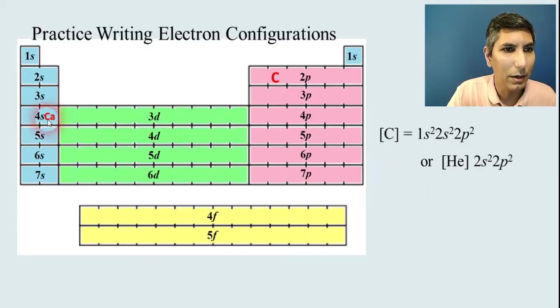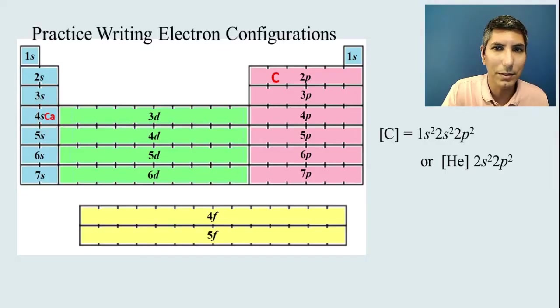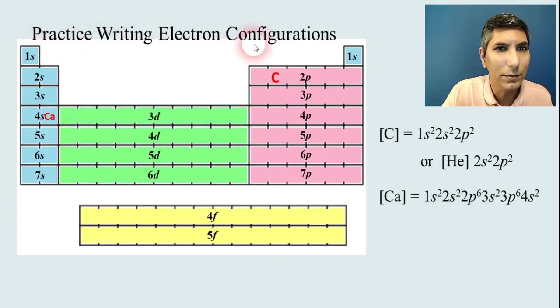If you want to try, let's say calcium, which is right here. Once again, we always start at the beginning of the periodic table. This is like a bus driver driving along the route, and the bus driver has to hit all the stops along all the streets. So it goes 1s².